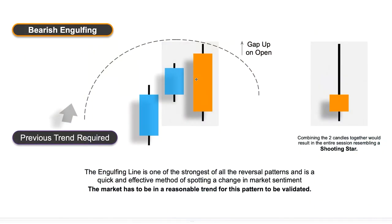The next couple of formations are called engulfing patterns. A bearish engulfing pattern is quite a dominant pattern. We've got two positive candles going up, then the market gaps up open above its previous close — suggesting positive momentum — but by the end of the day all of that gap has been removed. The sellers have dominated and the price has actually finished below the open of the previous candle, so it engulfs the previous candle. It's a bearish pattern because we're starting to see a downward movement in the marketplace.